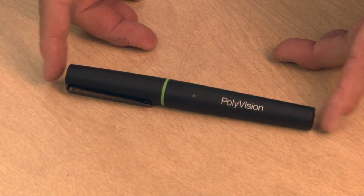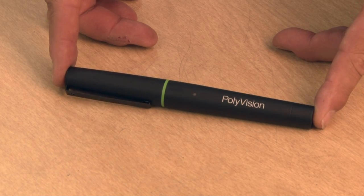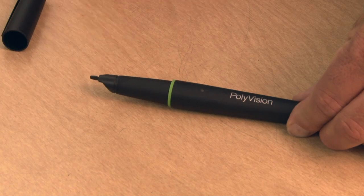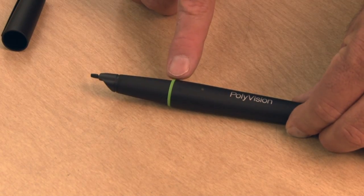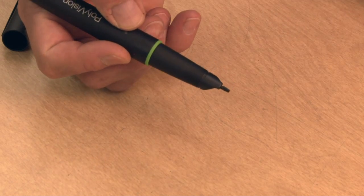Next we have the stylus. There's a few tips and tricks to the stylus that I want to mention. It has a removable cap. Note the green ring on the stylus. When you hold the stylus, make sure your fingers are behind the green ring.